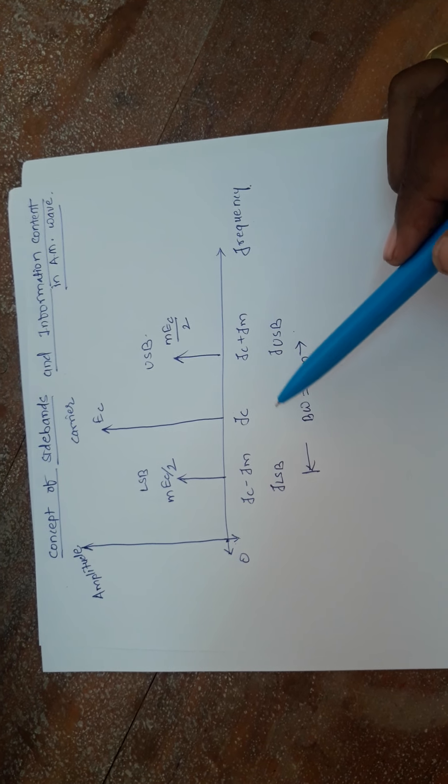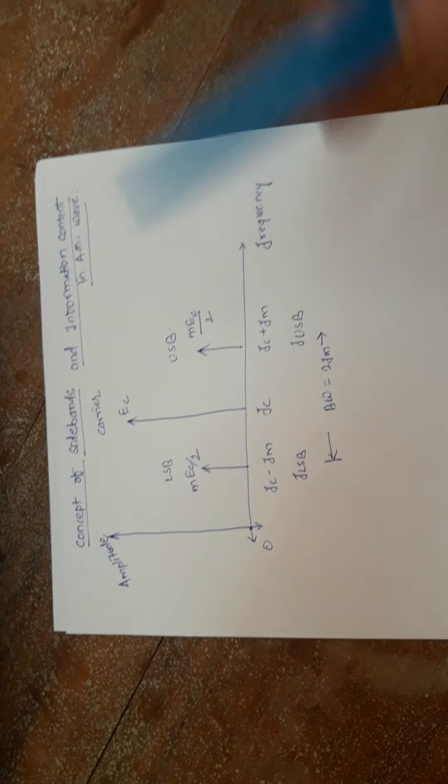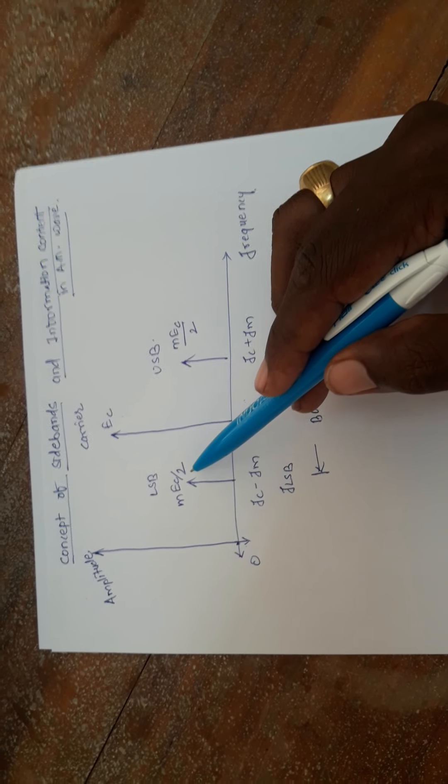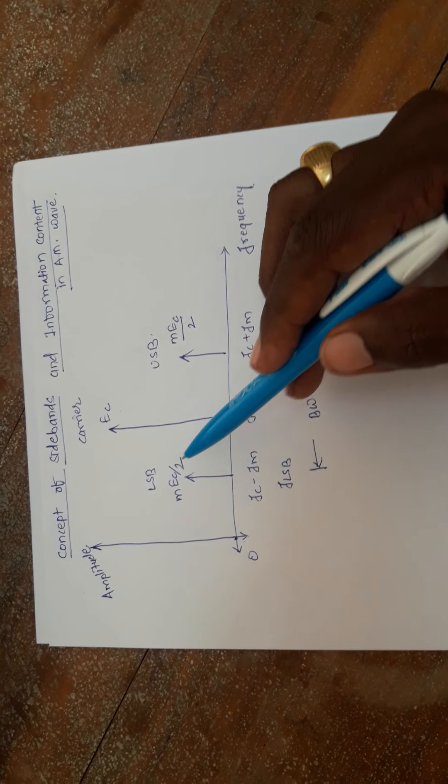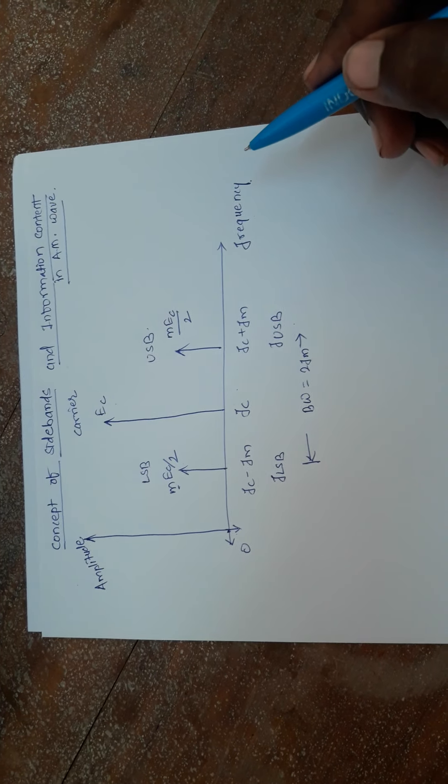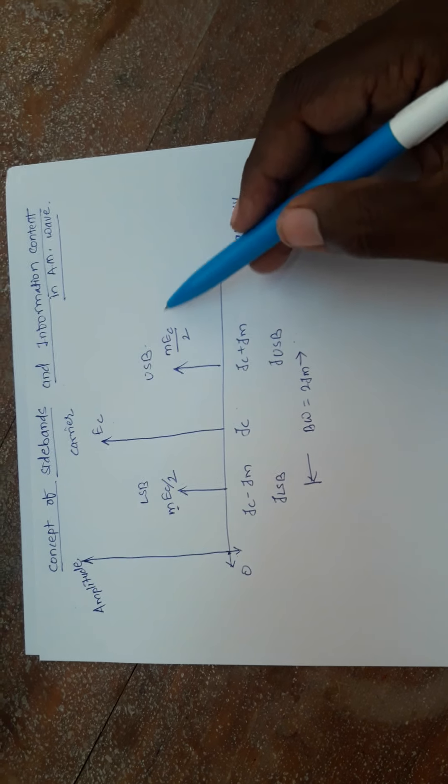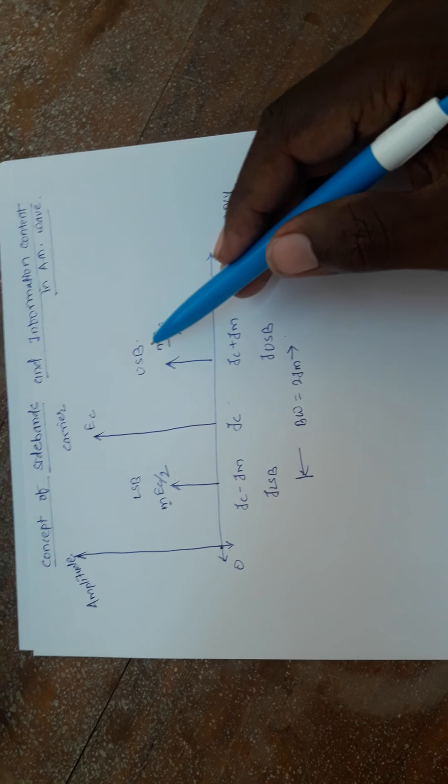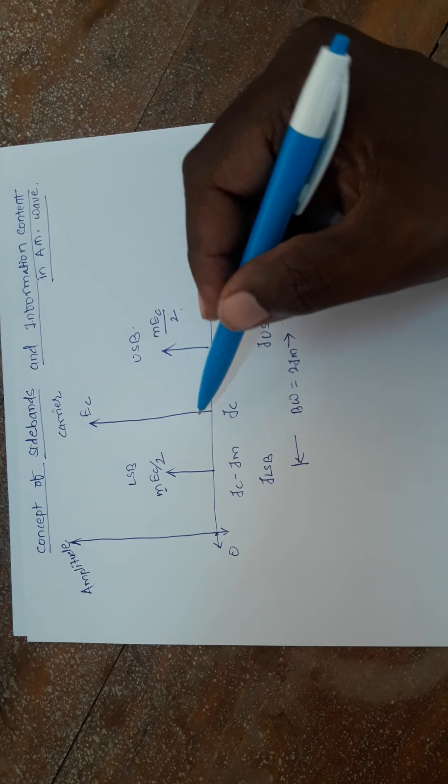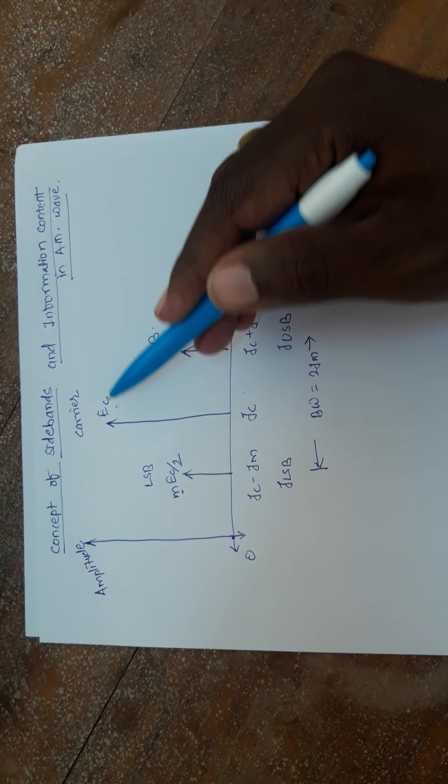While observing this particular point, what we see that the carrier component has its amplitude EC. But, the lower sideband component, that is FLSB, have its amplitude MEC by 2. What we observe that the amplitude of lower sideband component depends on the modulation index M. Similarly, when we see that the amplitude of USB, it is MEC by 2. Once again, what we observe that the amplitude of USB also depends on the modulation index. But, when we observe the amplitude of carrier component, what basically we observe that the amplitude of carrier component never depends on the modulation index.